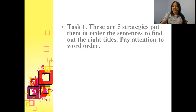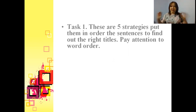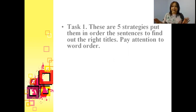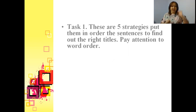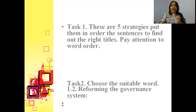For the first task, you are going to be introduced to the five strategies, but in this task the words are scrambled — they are placed in different positions in the sentence. You need to put them in the correct order: subject, verb, object, and so on. Pay attention to word order. Next.